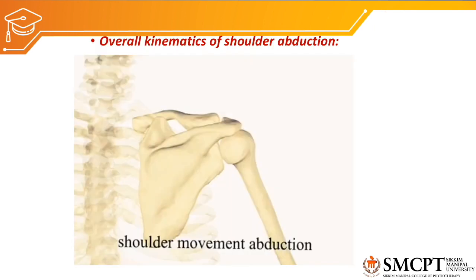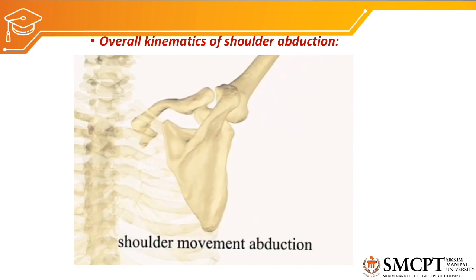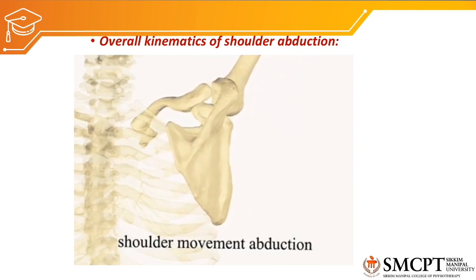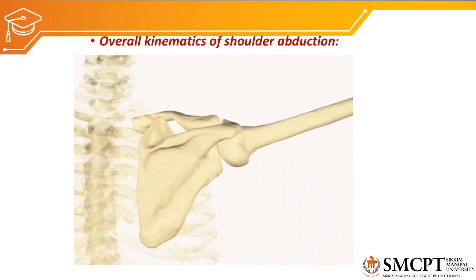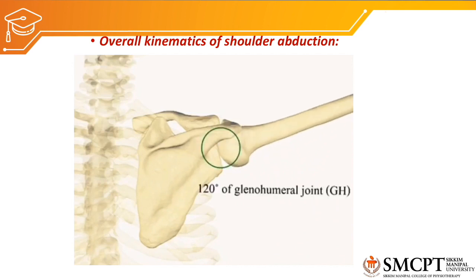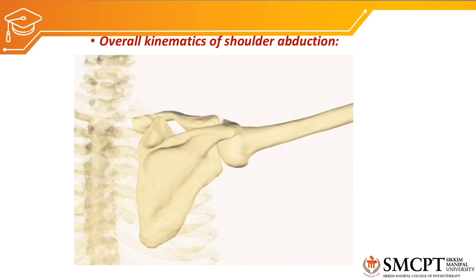Now let us discuss the overall kinematics of shoulder abduction. The 180 degrees of abduction is achieved by movement at the glenohumeral joint, movement at the acromioclavicular joint, movement at the sternoclavicular joint, and movement at the scapulothoracic joint. All four joints contribute to create 180 degrees of shoulder complex abduction. You can see this demonstration video — the scapulohumeral rhythm — where the scapula and humerus along with the clavicle move to create 180 degrees of abduction. If only the humerus moves, the overall abduction is reduced to 120 degrees because the glenohumeral joint provides only 120 degrees of range.